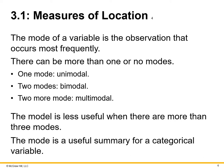The next measurement of location is the mode — the observation that occurs most frequently. There can be more than one or no modes: one mode is unimodal, two modes is bimodal, and two or more modes is multimodal. The mode is less useful when there are more than three modes, and it is a useful summary of a categorical variable. For example, the most used number in a lottery system, or the most common age for MBA program enrollment, represents the mode.